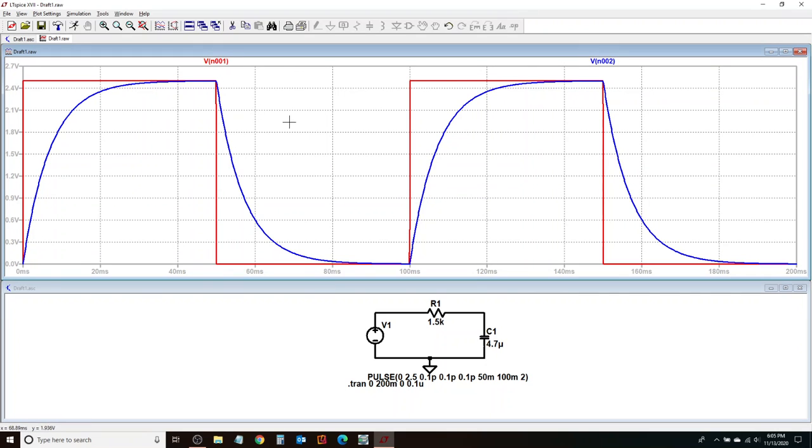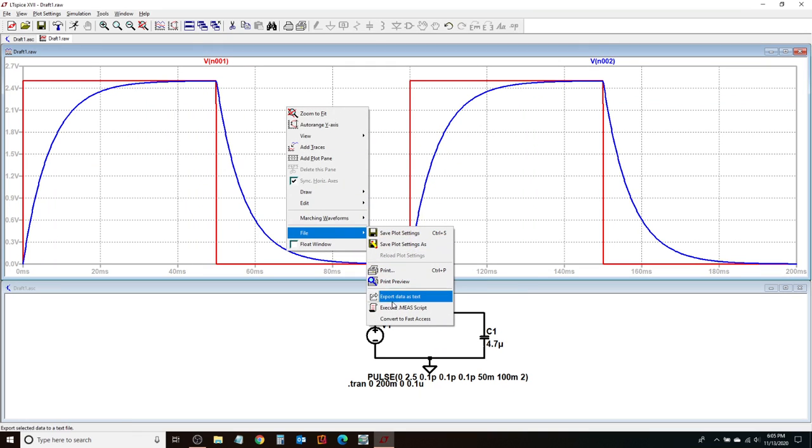Now, for example, if I wanted to export all of this data into CSV file that I could import into MATLAB, I can also do that. I would need to right click on this graph, and then go into file and then export data as text. And that would give me a text file that I could later import in MATLAB, for example.